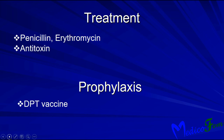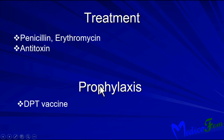Treatment for Corynebacterium diphtheriae infection includes penicillin and erythromycin. When more toxin is released or to prevent complications in delayed cases, antitoxin is given. For prophylaxis, the DPT triple vaccine — diphtheria, pertussis, and tetanus — is administered.